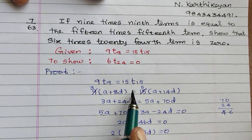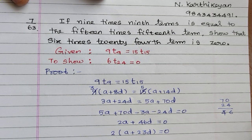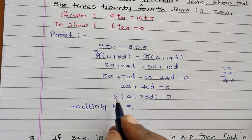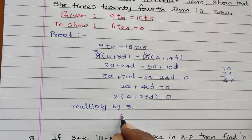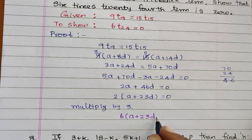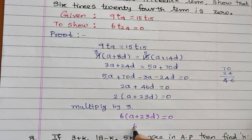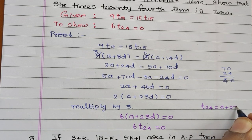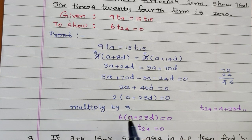Taking 2 as a common factor: 2(a + 23d) = 0. Multiplying both sides by 3 gives 6(a + 23d) = 0. Since t24 = a + 23d, this is nothing but 6 × t24 = 0. Hence proved.